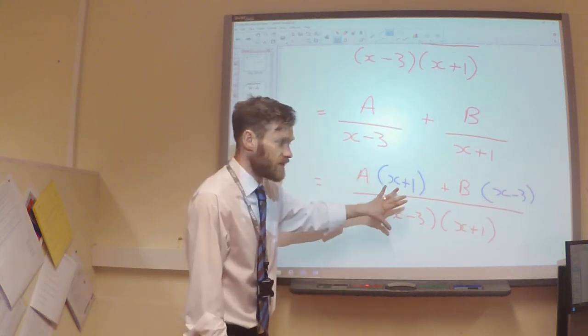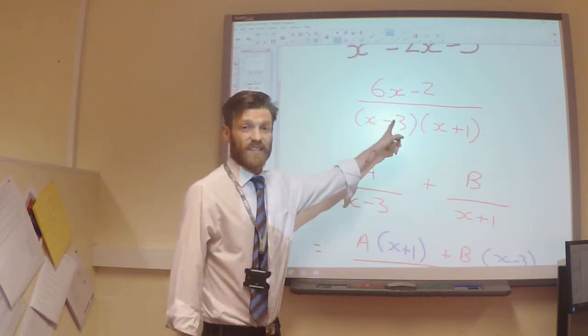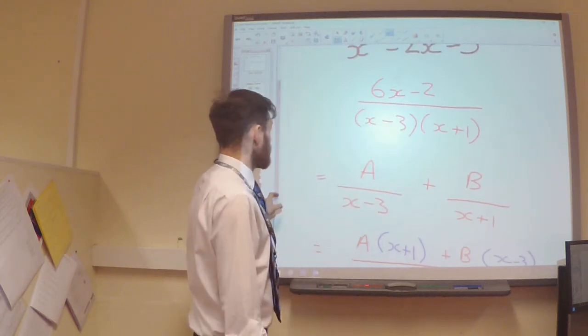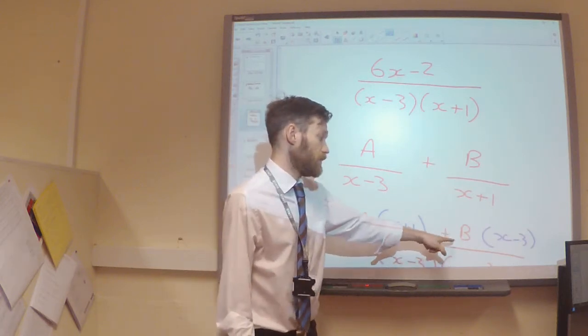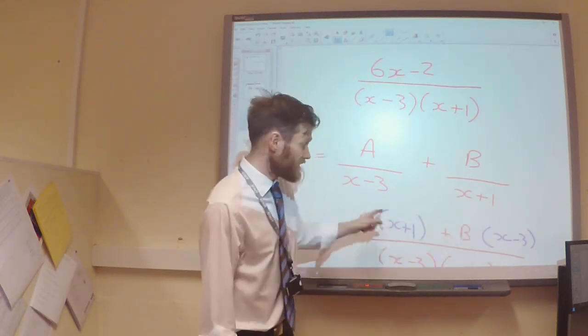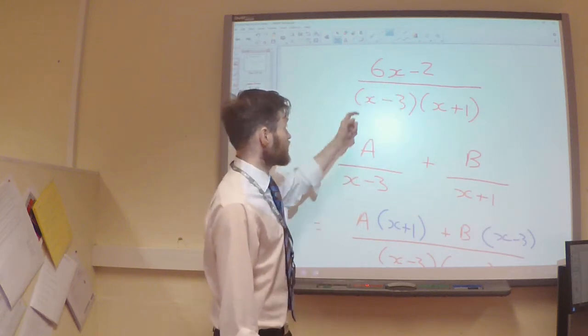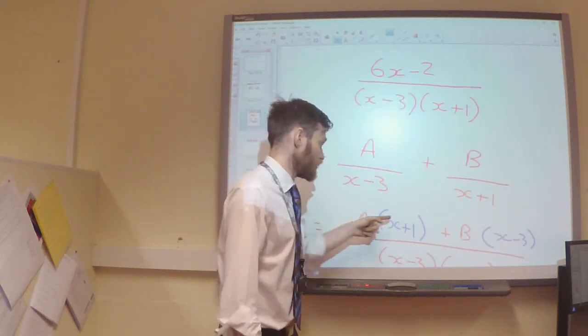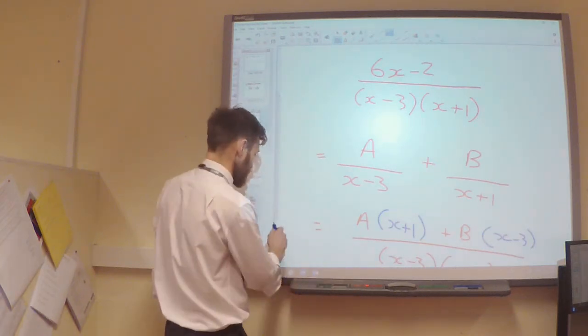So, if this fraction is to be the same as the fraction that I began with, then my numerator, my A times x plus 1 plus B times x minus 3, that has to be the same as 6x minus 2. So, I'm just going to write that down as an equation.